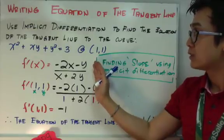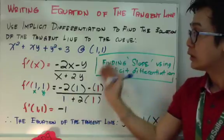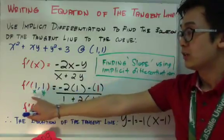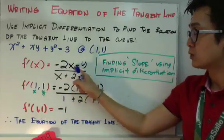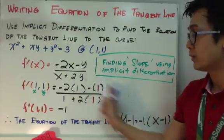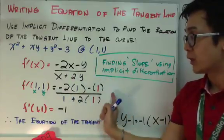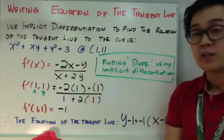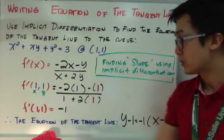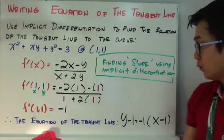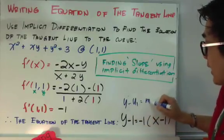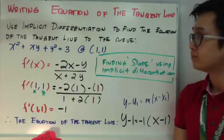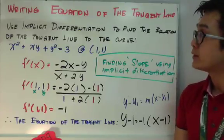We're finding the equation of the tangent line to the curve. We replace x and y with our point (1,1). By substitution: (negative 2·1 minus 1) all over (1 plus 2·1), which simplifies to f'(1,1) equal to negative 1. So this is the slope of our tangent line. Using point-slope form, y minus y₁ equals m times (x minus x₁), we have y minus 1 equals negative 1 times (x minus 1). That's the equation of the tangent line.